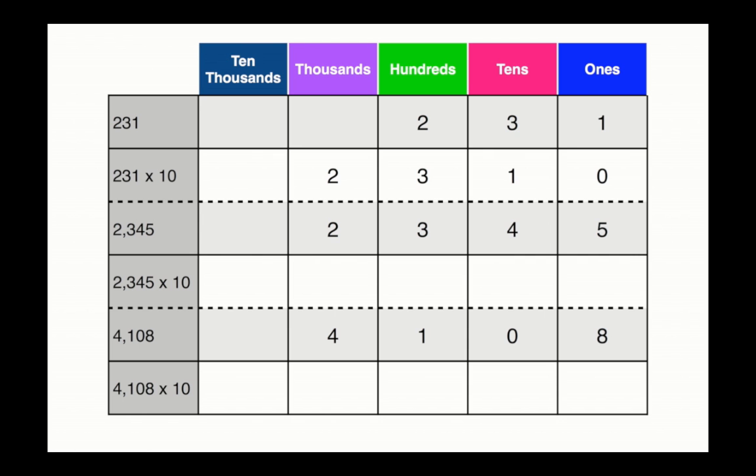Now let's try multiplying with some bigger numbers. You'll see that the first problem is done for you: 231 times 10 is 2,310. Notice how the 0 from the 10 has moved into the ones column, shifting everything over to the left. Now let's begin the next problem.